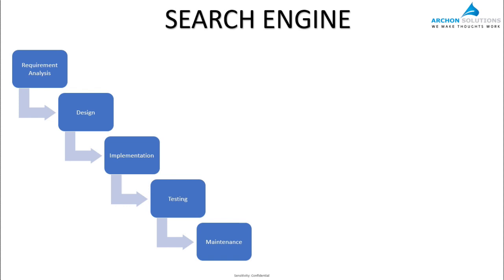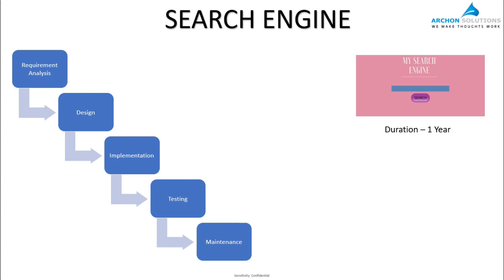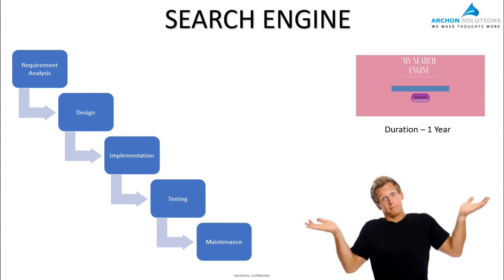Say this was developed by a 19-year-old who thinks the search engine would look really pretty with pink, purple, balloons, and butterflies — but the client may not approve of that. In the waterfall model, client feedback was not taken until the entire life cycle was finished, which could have taken six months, seven months, or maybe a year. So a year's worth of hard work is wasted because the client did not approve.